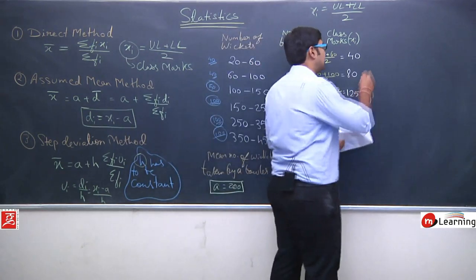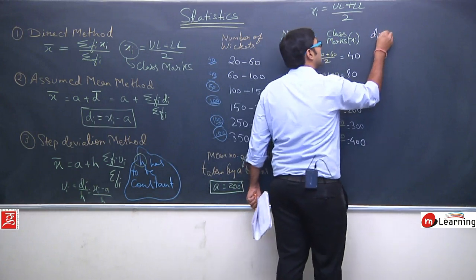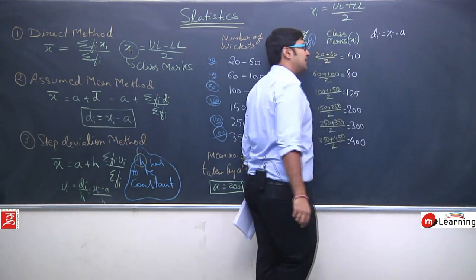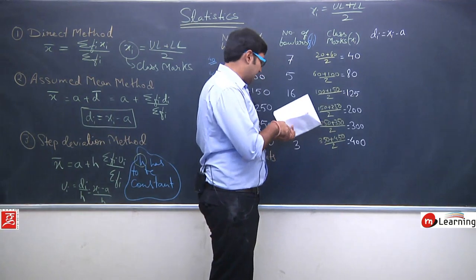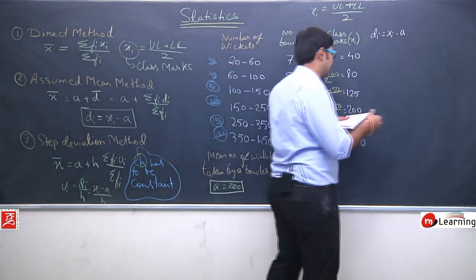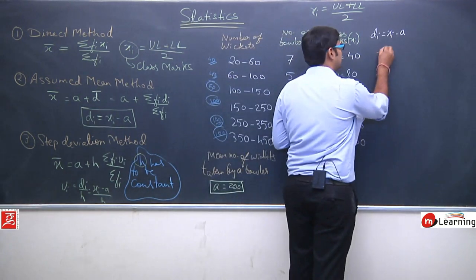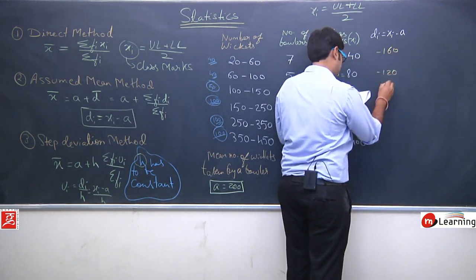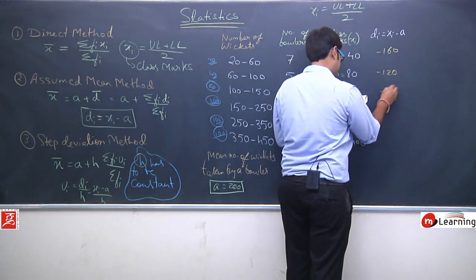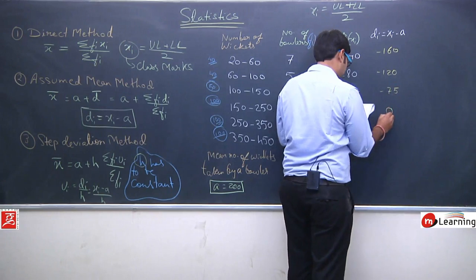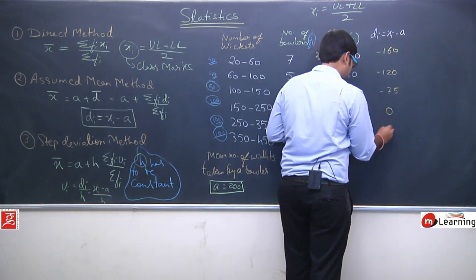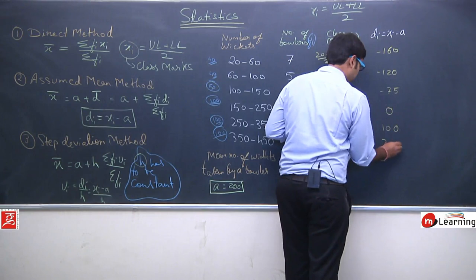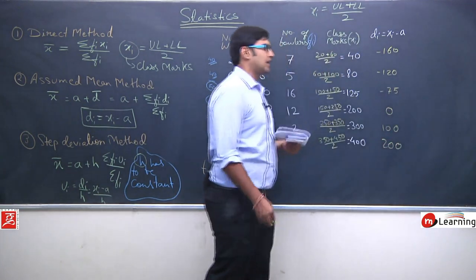Calculating d_i = x_i minus a (where a = 200): 40−200 = −160; 80−200 = −120; 125−200 = −75; 200−200 = 0; 300−200 = 100; 400−200 = 200. These are the deviations d_i.